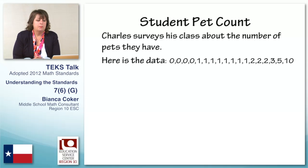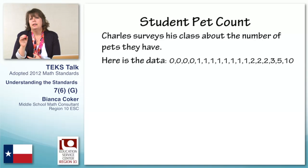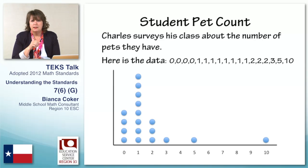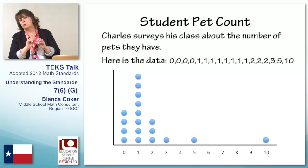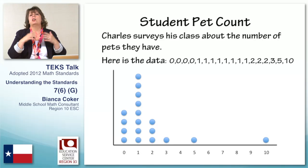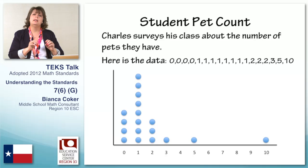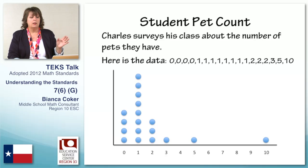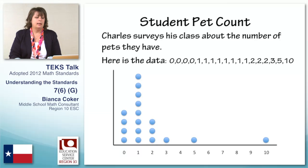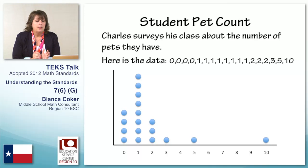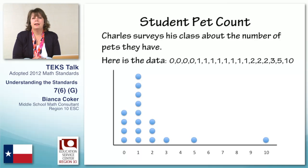If we represent that data in a dot plot, it might look something like this. In the new standards, instead of calling things line plots and strictly having a numerical horizontal axis, now we're generalizing those into dot plots where we have anything at the bottom — it could be numerical or it could be categorical. In this case we have numerical, but it could be categorical in any dot plot. Taking a closer look at that graph, we see the stacks of dots indicating how many students have a certain number of pets at home.